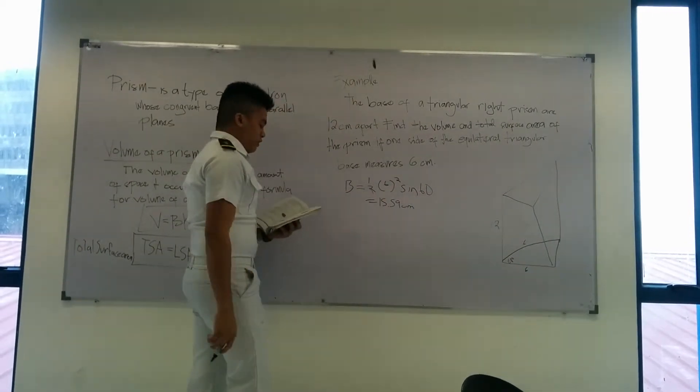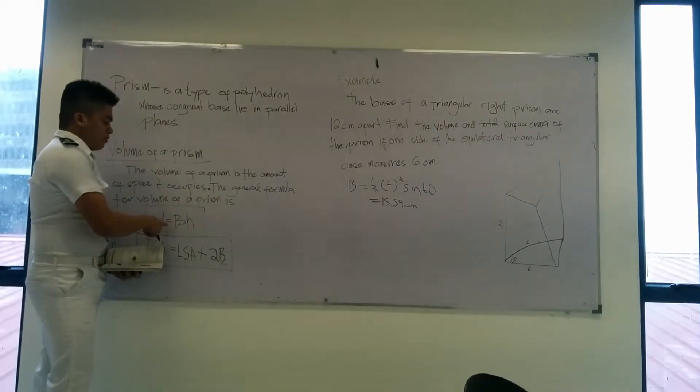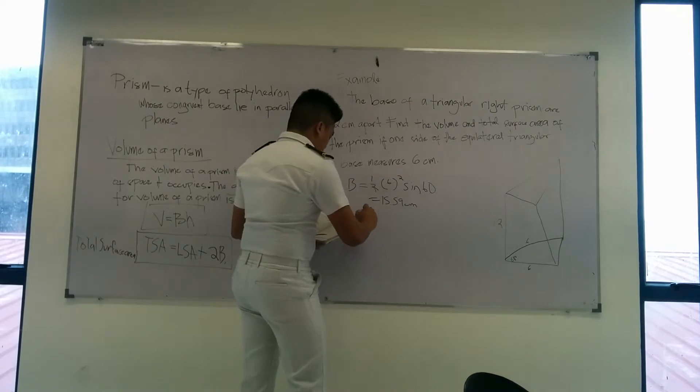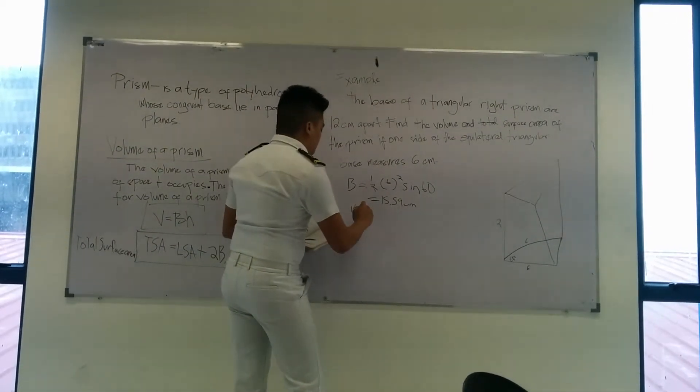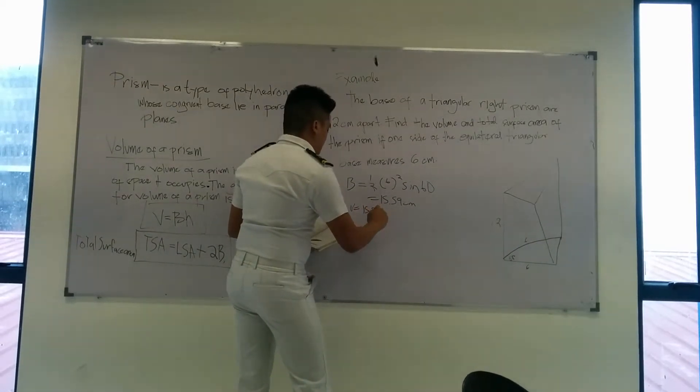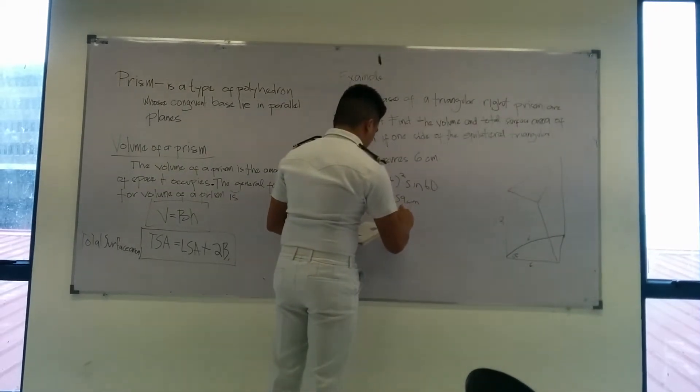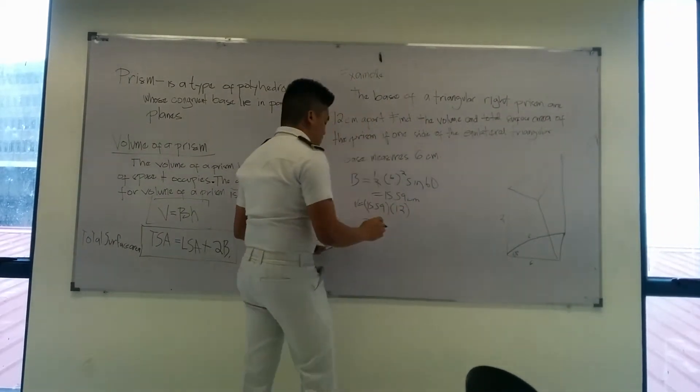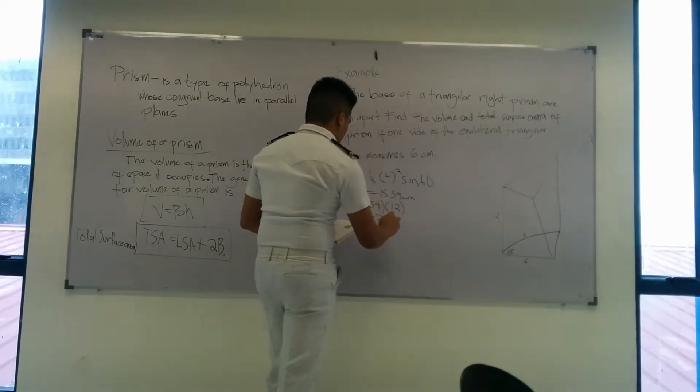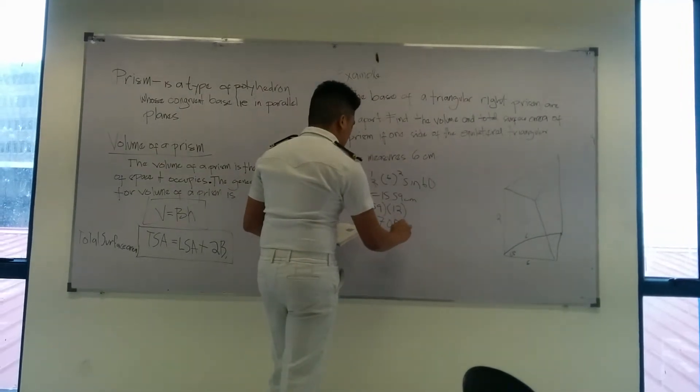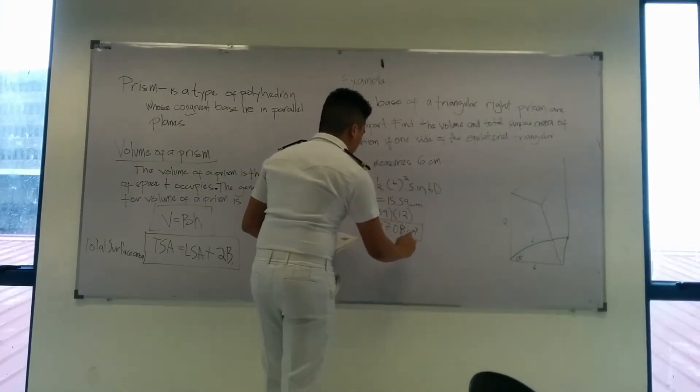To get the volume of prism, we will use this formula base times height. The base is 15.59 times the height 12 equals 187.03 cubic centimeters. This is the volume of the prism here.